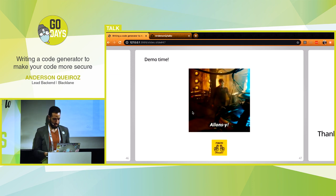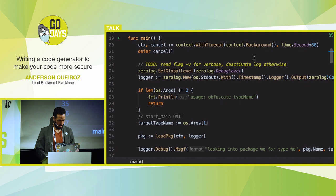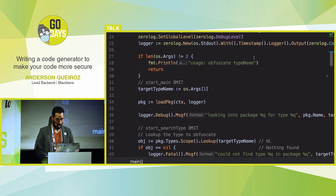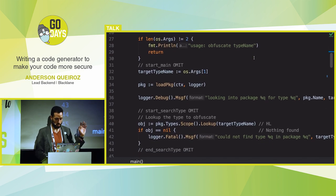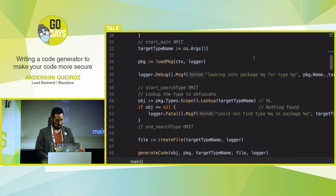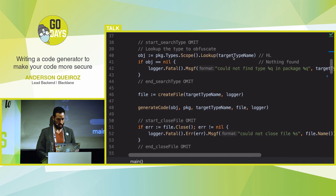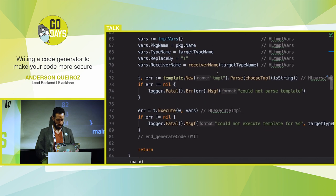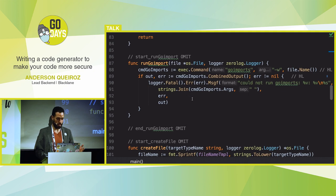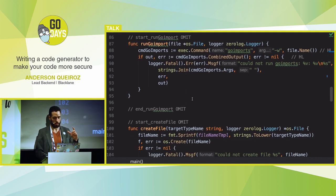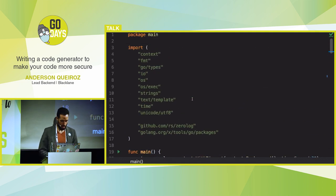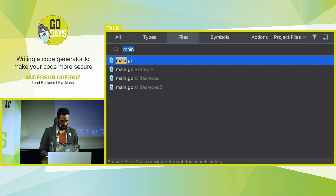Now the demo — let's cross our fingers and show everything together. This is my main function for the obfuscate tool, exactly the source code shown in the slides. We process the arguments, load the package, do the lookup, create the file, generate the code, close and save the file. There are also all the helper functions I showed you. The odd-looking comments in the source are directives I use for the presentation tool to know which piece of code to show.